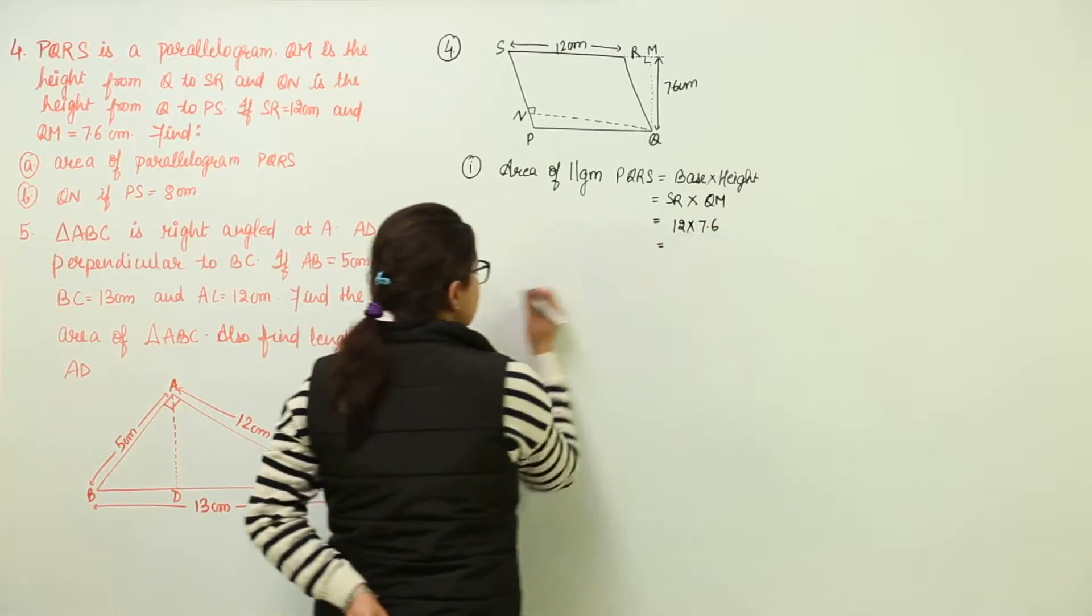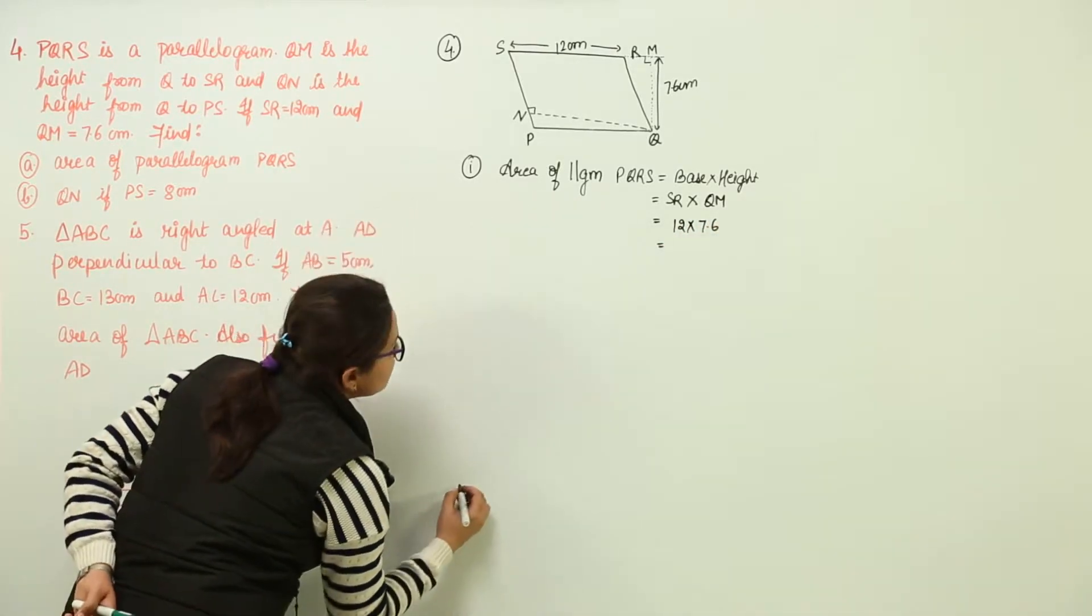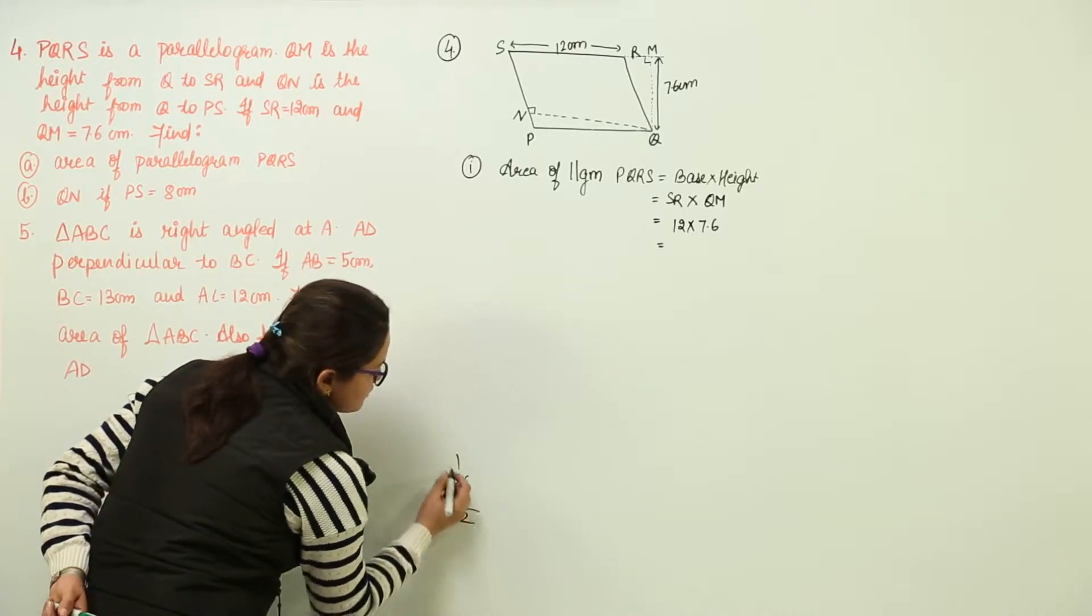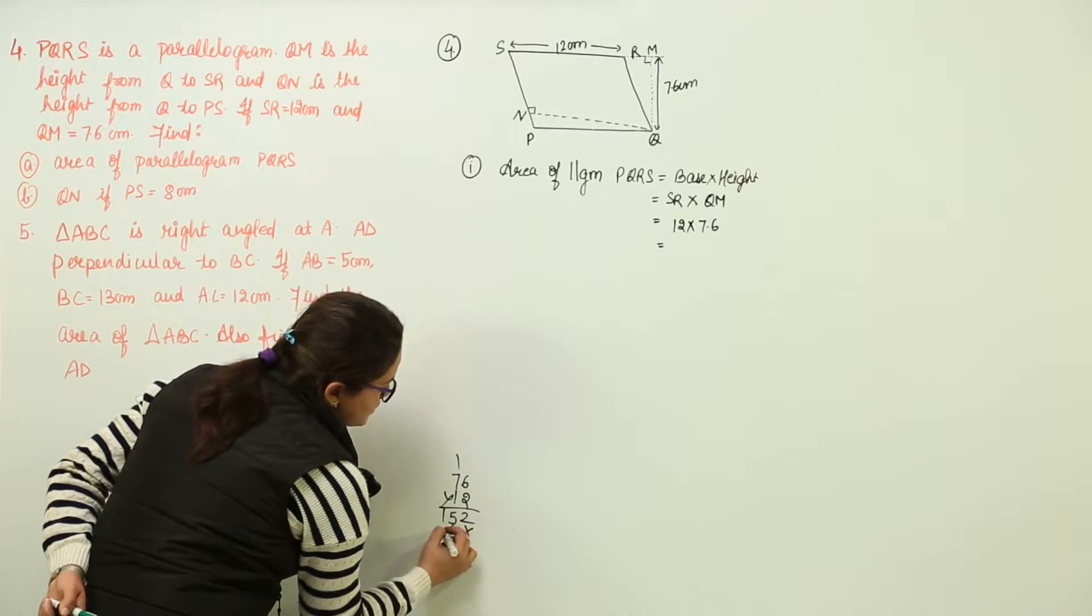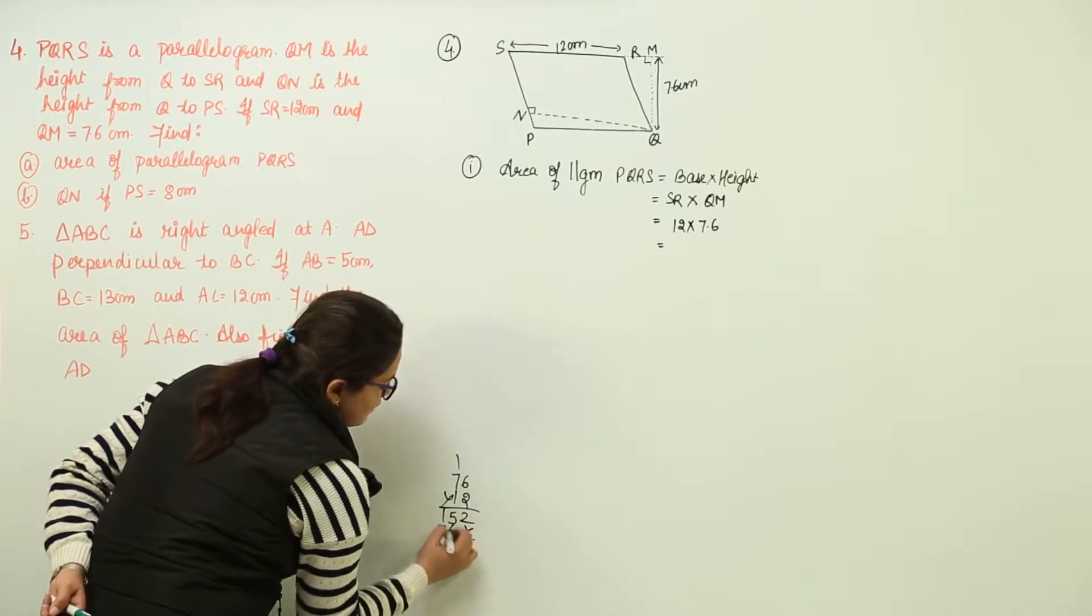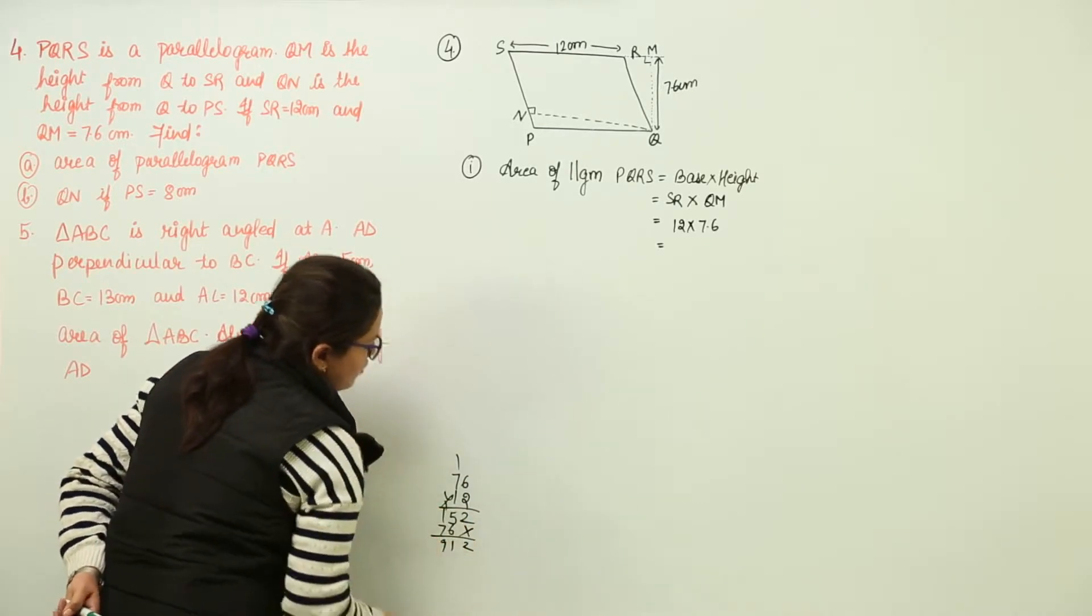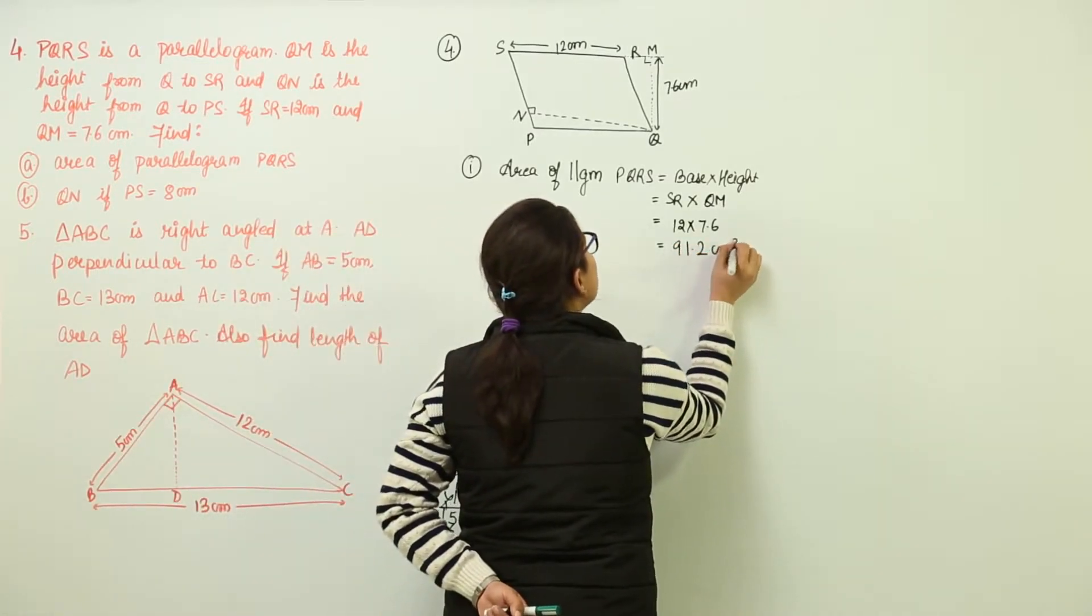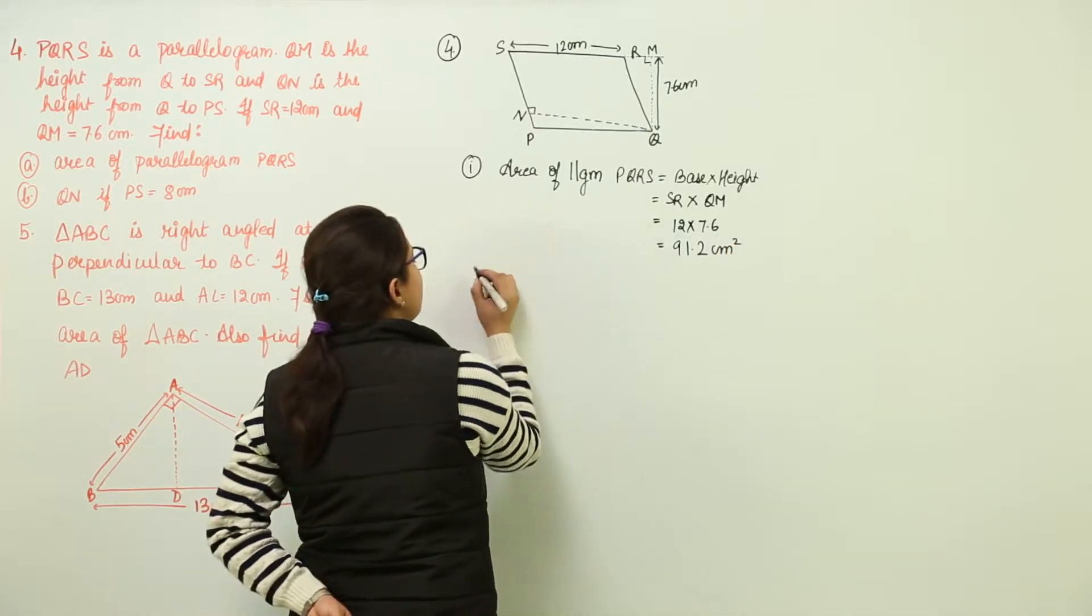That is going to give us some value. And we will do it over here. 76 into 12. We get 91.2 centimeters square as the area for this parallelogram.